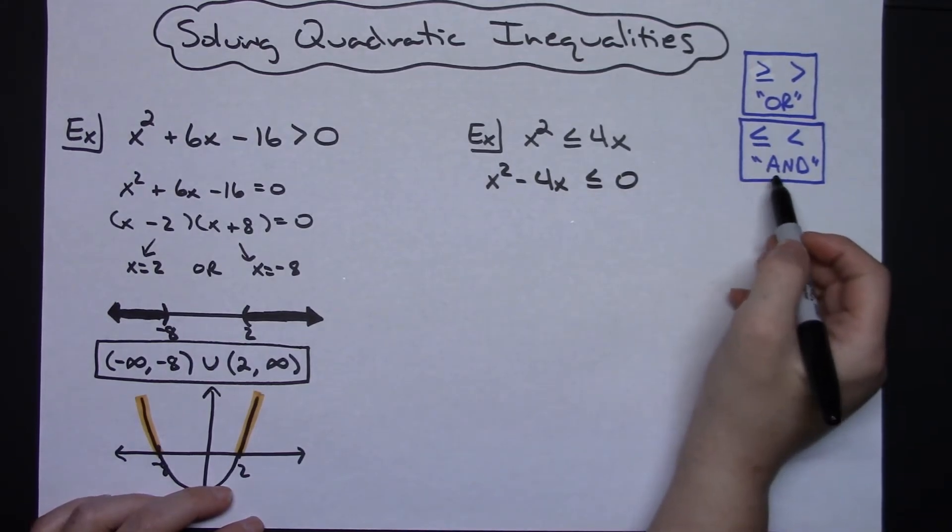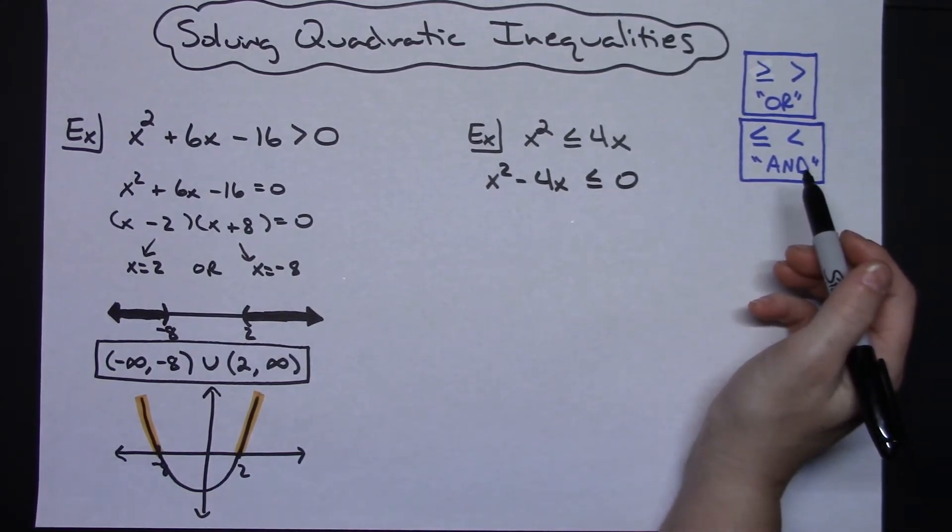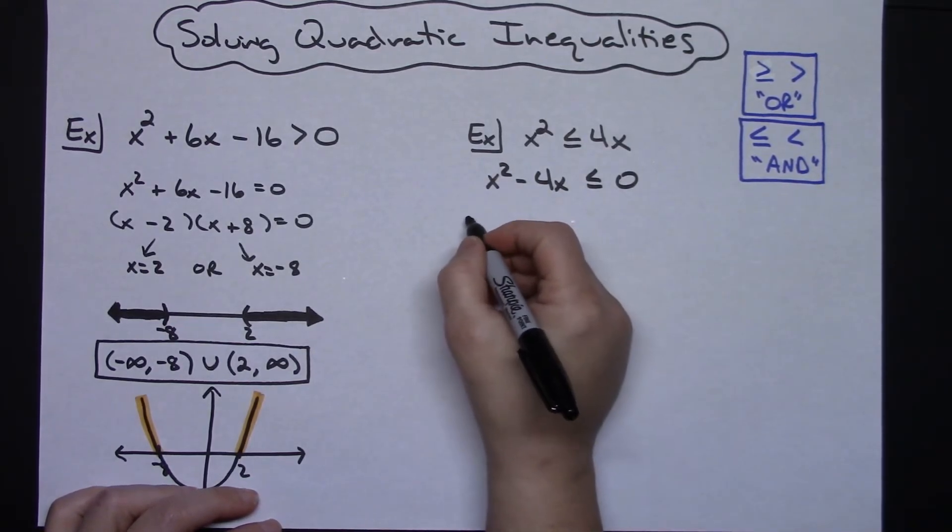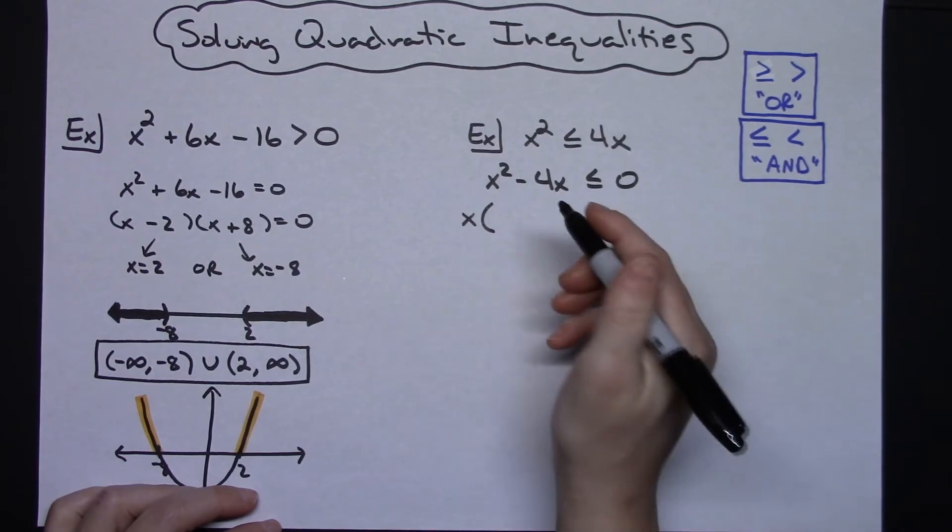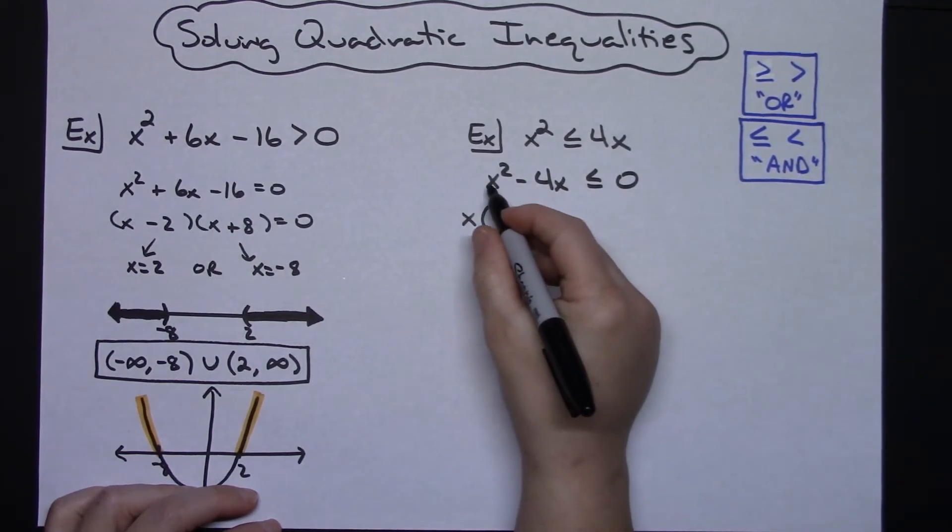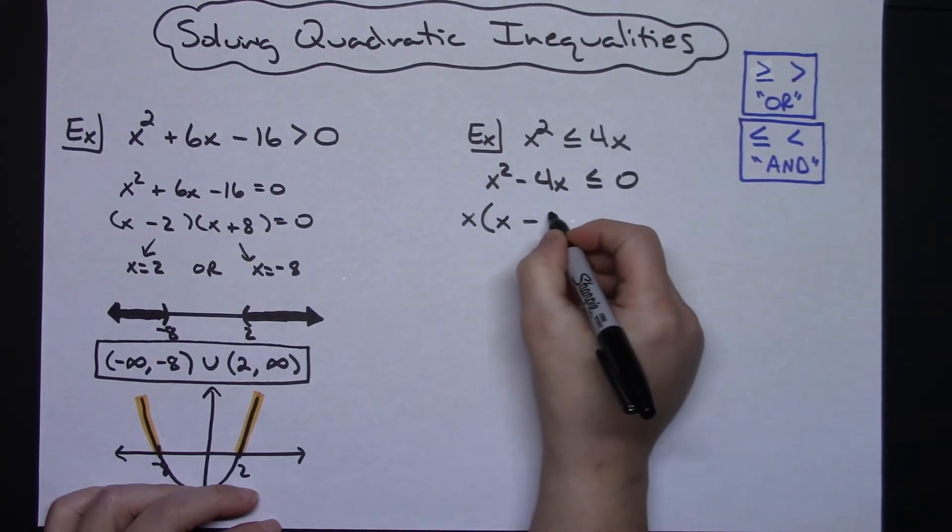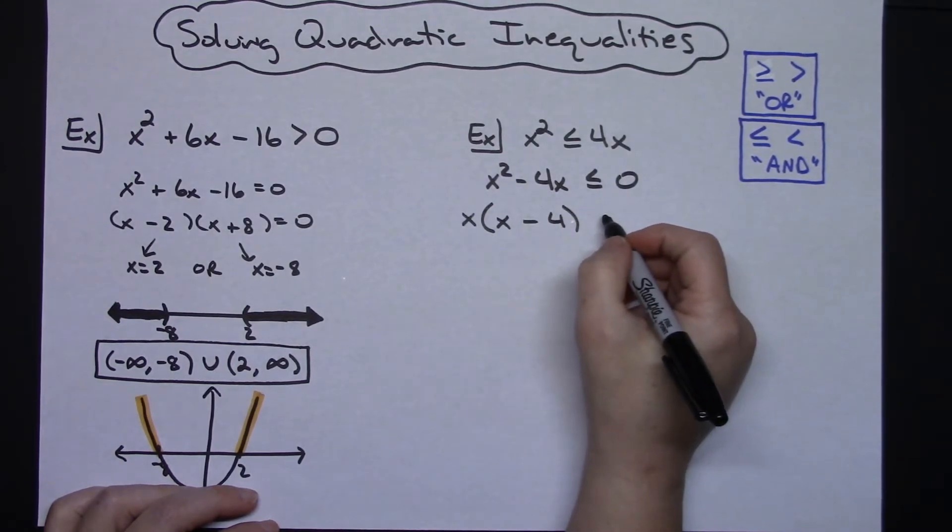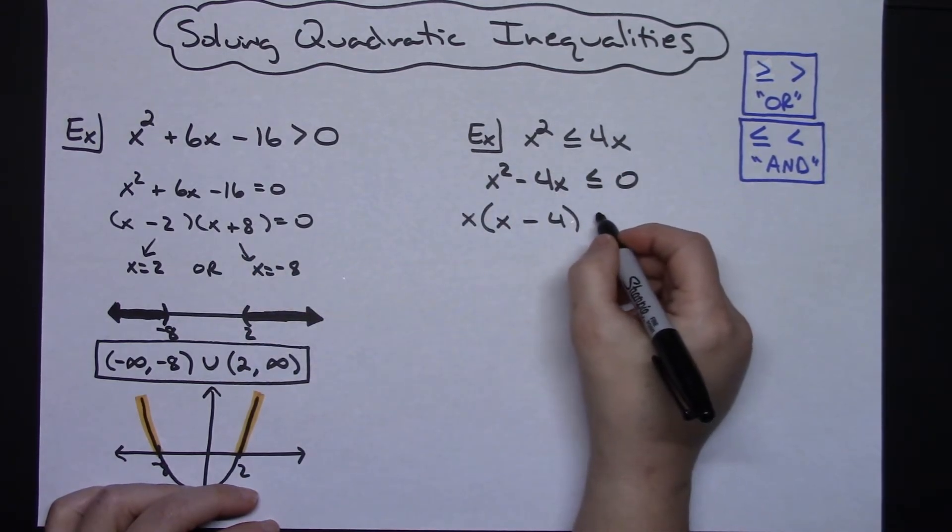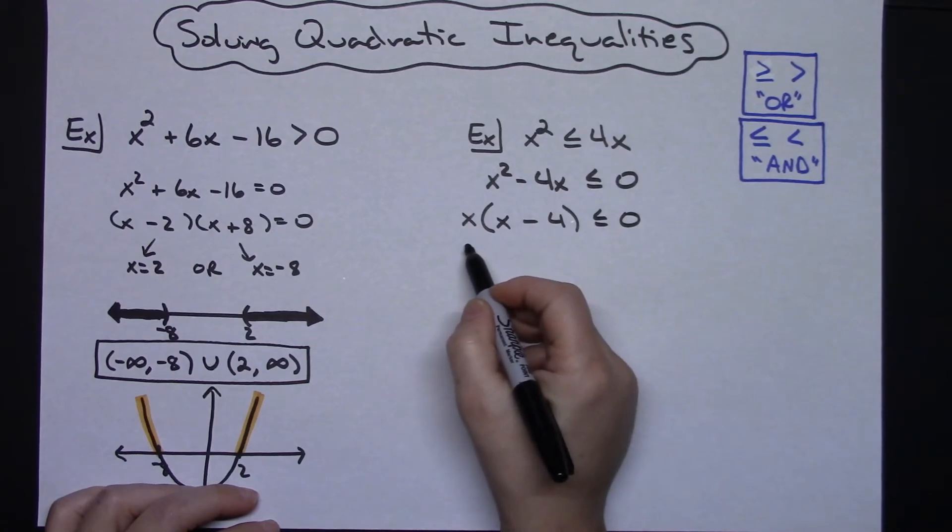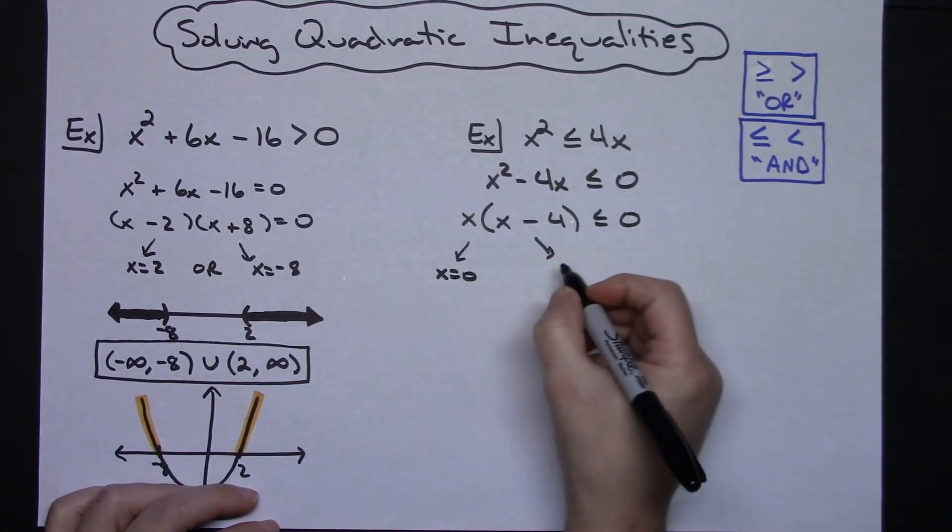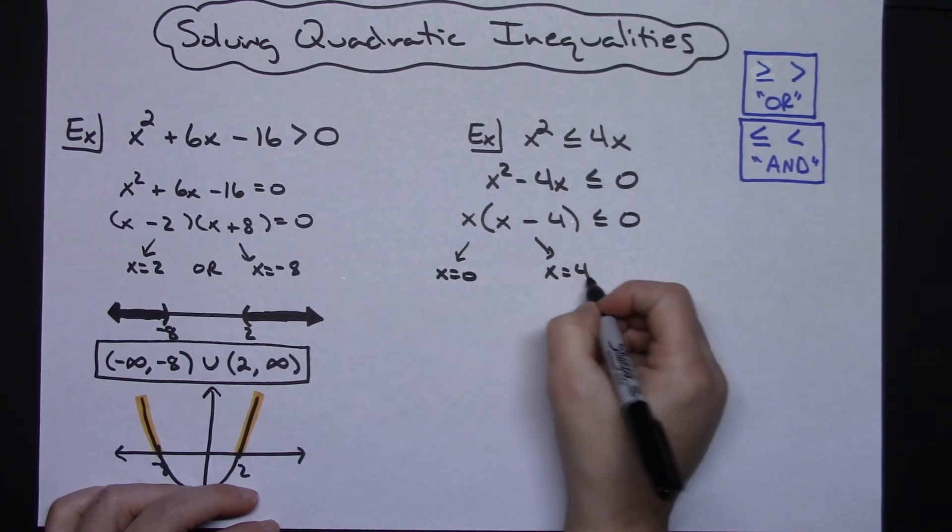So that means all my solutions are going to come in the middle. From here I can factor out an x. You always want to try factoring first because if factoring works, that's probably going to be the easiest way to go. I would have x(x - 4) ≤ 0. I could say equal to 0 or less than or equal to 0. So on each of these I'm going to get x = 0 and x = 4.